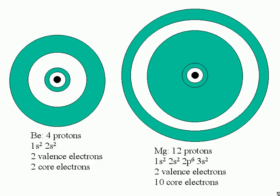Here's a diagram to help you visualize the trend. In this diagram, we compare beryllium and magnesium. Both belong to group 2A. Beryllium is in the second period, while magnesium is in the third period.